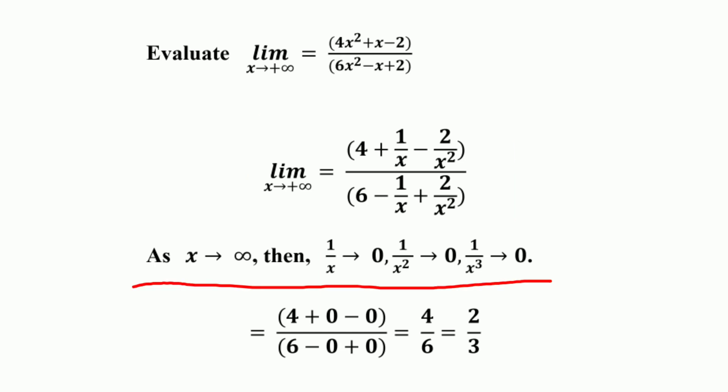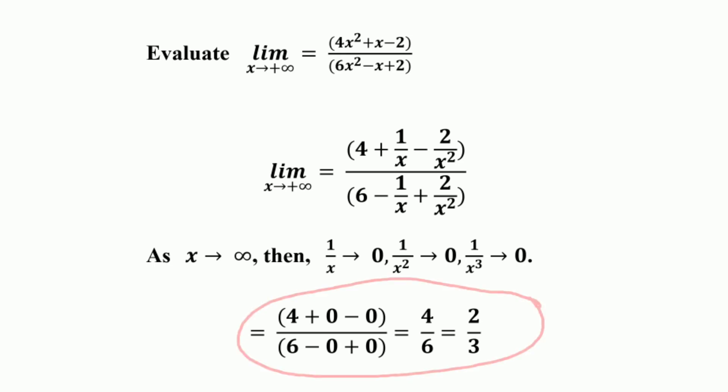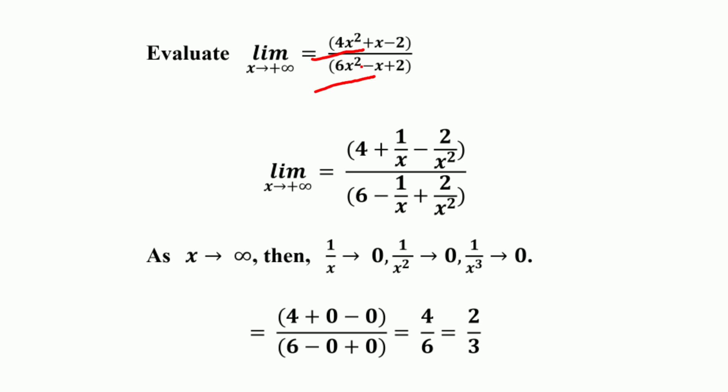As x approaches infinity, then 1/x, 1/x², and 1/x³ all approach 0. Substituting, it becomes (4 + 0 - 0) / (6 - 0 + 0) = 4/6, which simplifies to 2/3. The highest degree in the numerator is the same as the degree of the denominator, so the limit to infinity is the ratio of the leading coefficients, equal to 2/3.